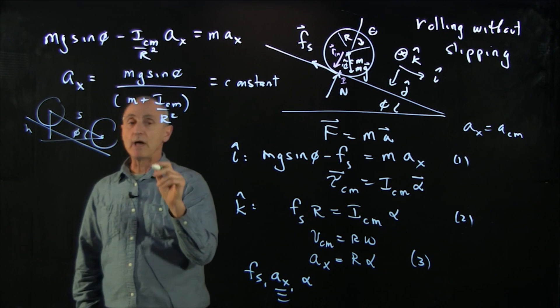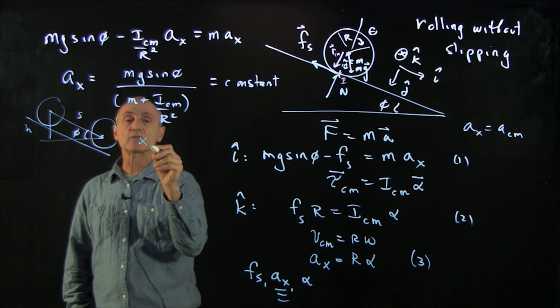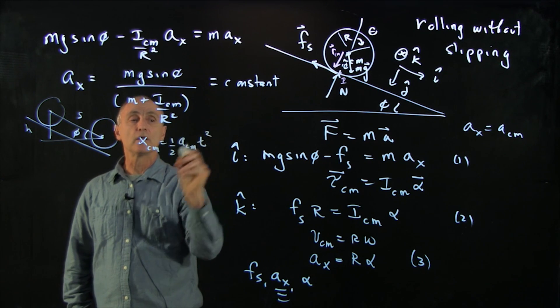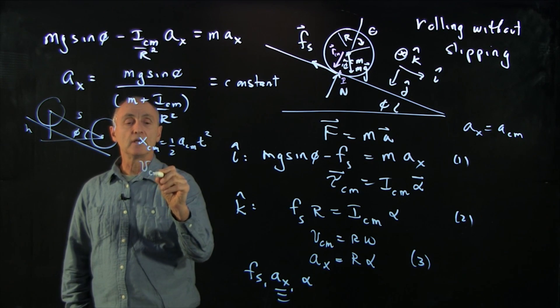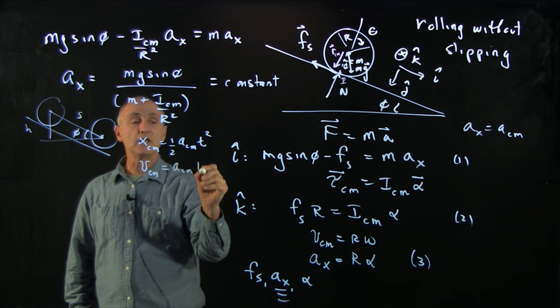and we could work this out, we have that the x cm is 1 half a cm t squared. And we know that the velocity v cm equals a cm times t.